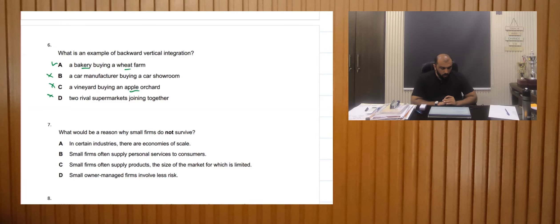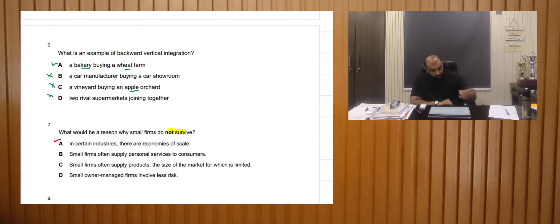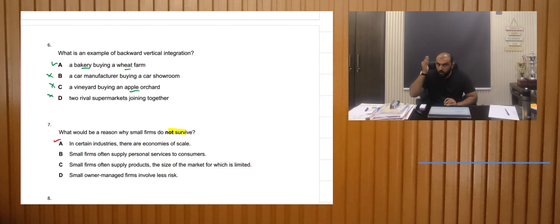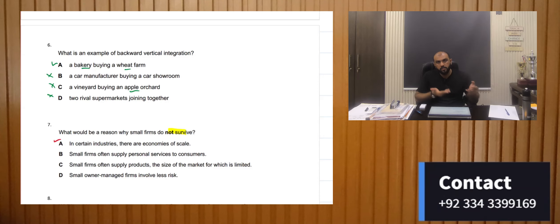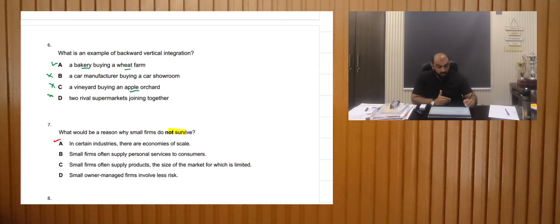Why would small firms not survive? In certain industries there are economies of scale — this is the right answer. Large firms have economies of scale so their average total cost falls, and small firms cannot produce cheaper goods and are driven out of the market. Small firms often supply personal services, meaning they would survive, so that option is wrong.